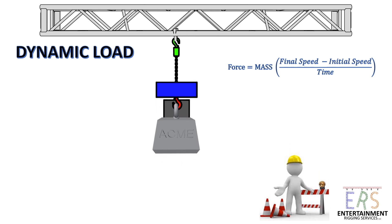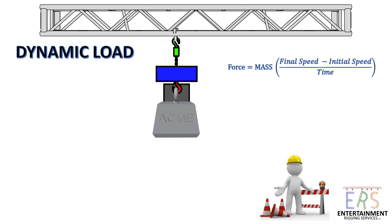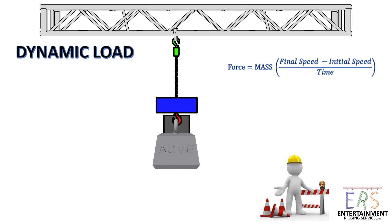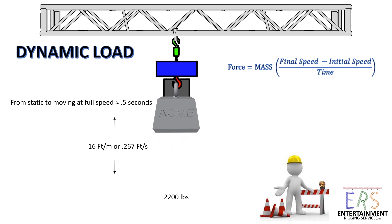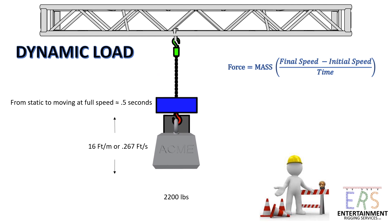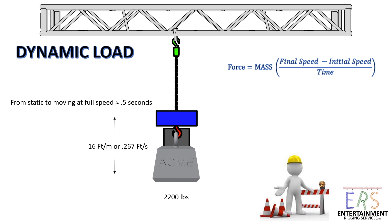In the example of our chain hoist, we could in theory determine the peak dynamic load on our truss by researching the travel speed of the hoist and how quickly it starts and stops. Our hoist has a speed of 16 feet per minute, a capacity of 2,200 pounds, and a start time of half a second. It's important to make sure your units match — hoist speed is usually in feet per minute but acceleration is in feet per second, so we need to convert. We take our final speed of 0.267 feet per second minus our initial speed of zero, divide by our time of 0.5 seconds, then multiply by our mass of 2,200 pounds — but wait, something's not right. That's right: I forgot something important. In the U.S., pounds are expressed as a unit of weight, not mass, so using 2,200 pounds in our equation won't give the correct answer.